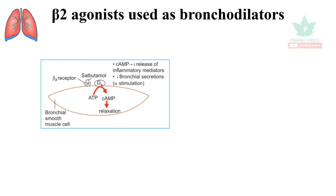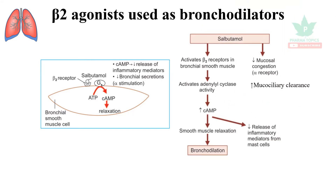The increase in cyclic AMP causes muscle relaxation. It also decreases the inflammatory mediators and decreases the bronchial secretions. As shown in the diagram, salbutamol activates the beta receptors, activates adenyl cyclase, increases cyclic AMP, and causes bronchodilation.